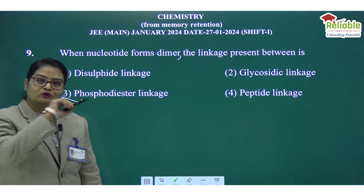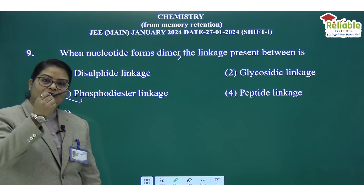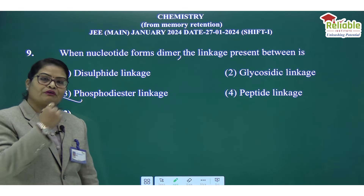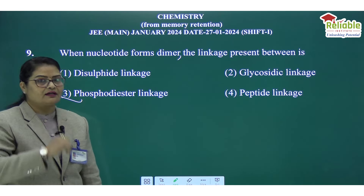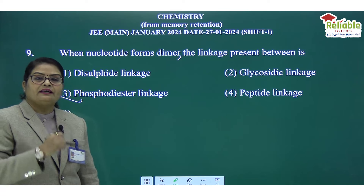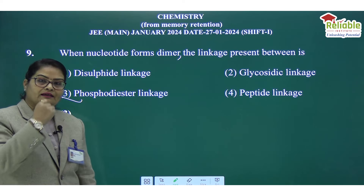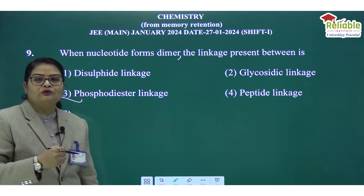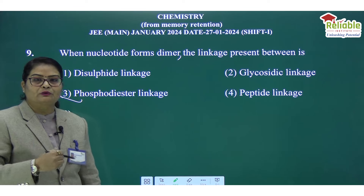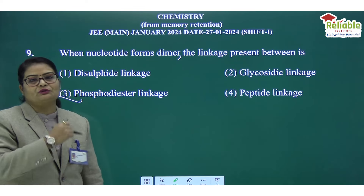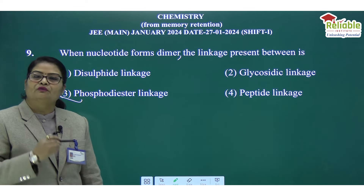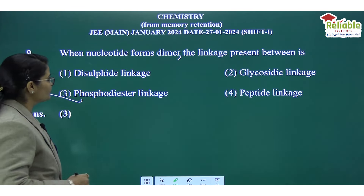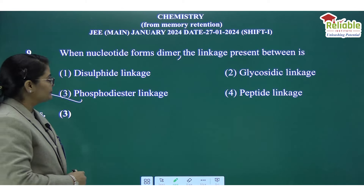The correct answer is phosphodiester linkage. When two nucleotides form a dimer, the 5th carbon of one pentose sugar connects to the 3rd carbon of the other nucleotide via a phosphodiester linkage. This is a simple theory-based question.